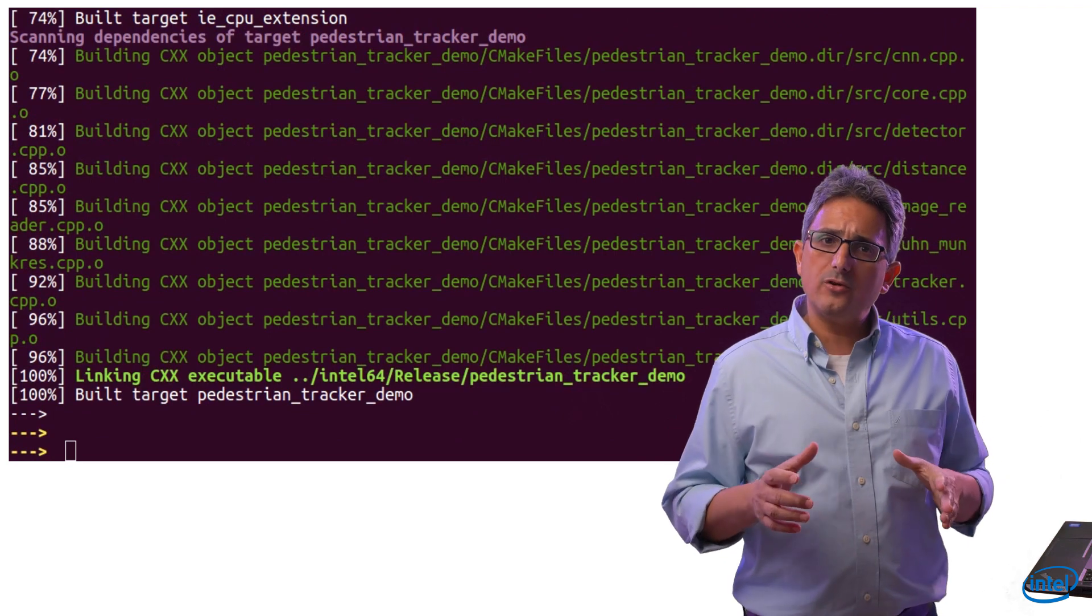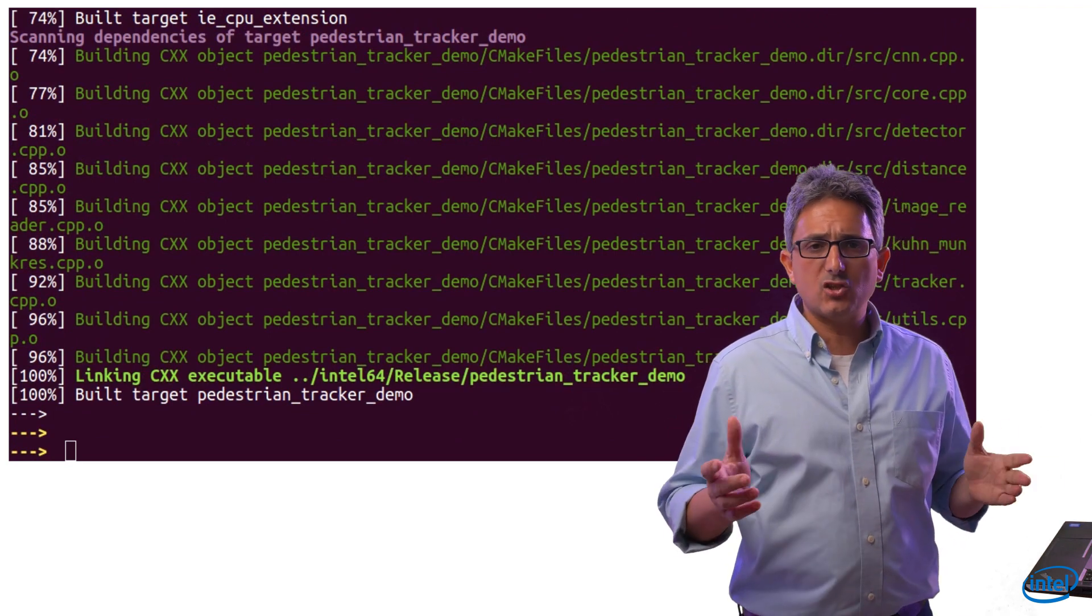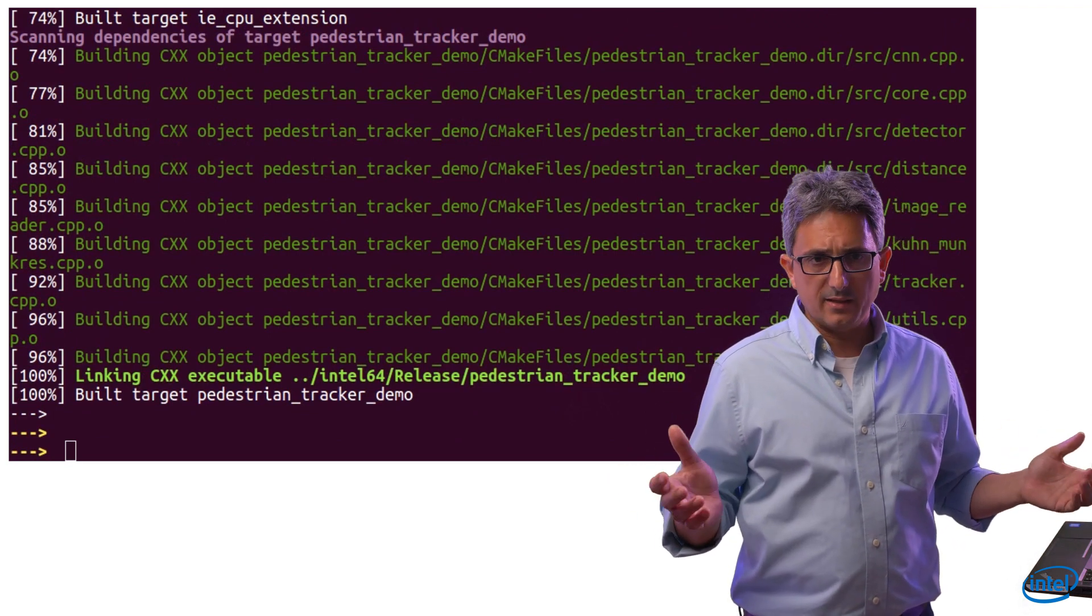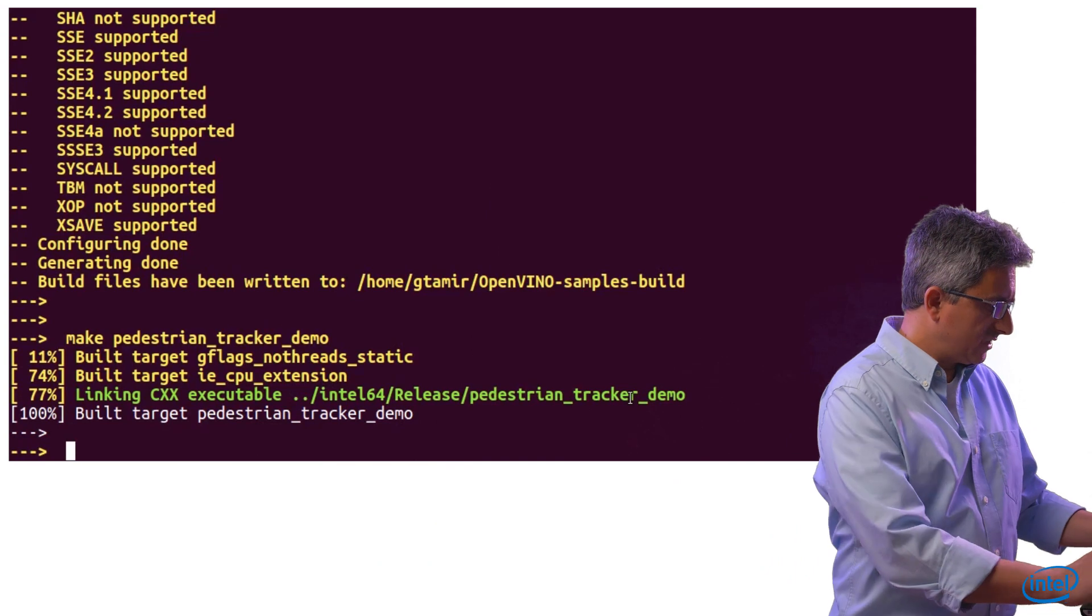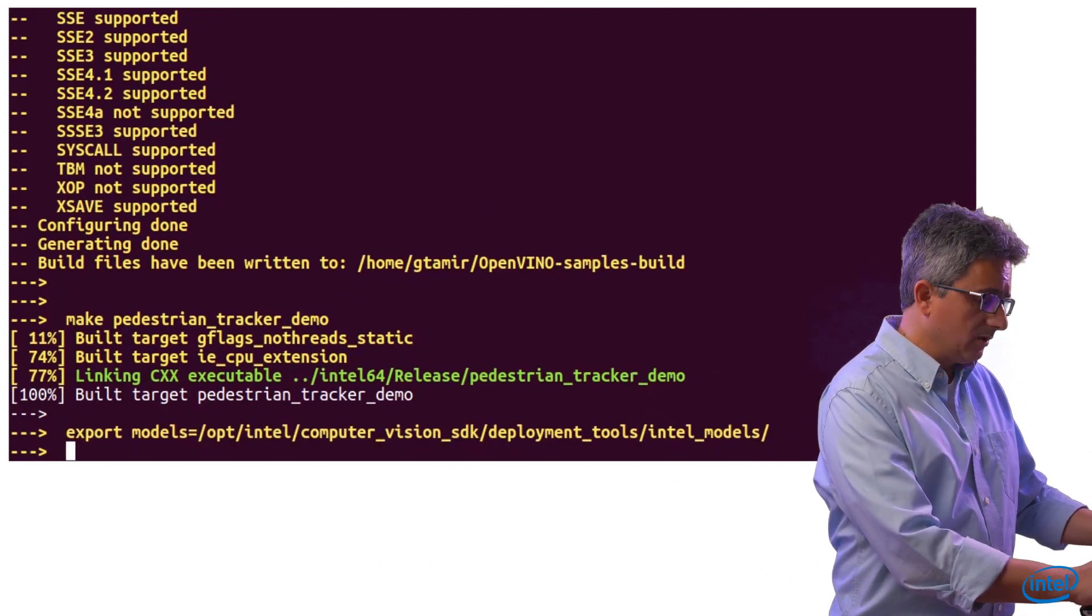Now I have my own version of this sample. I can make changes and just make again. Let's define the Intel models path. Export models.